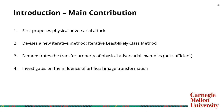The third mini part covers the main contributions. First, it proposes physical adversarial attack. Second, it devises a new iterative method called the iterative least likely class method. Third, it demonstrates the transfer property of physical adversarial examples, though the experiment is not sufficient and detailed. Fourth, it investigates the influence of artificial image transformation.